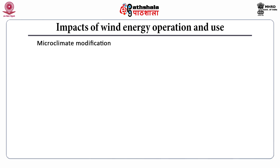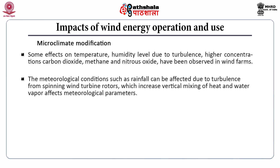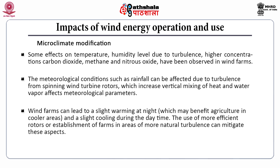Wind power also has an impact on microclimate modification. Some effects on temperature and humidity levels are observed due to turbulence, with higher concentrations of carbon dioxide, methane and nitrous oxide in wind farms. Meteorological conditions such as rainfall are also affected due to turbulence from spinning wind turbine rotors that increase vertical mixing of heat and water vapor. Wind farms can lead to slight warming at night and slight cooling during daytime. Using the most efficient rotors or establishing farms in areas of more natural turbulence can mitigate these aspects.